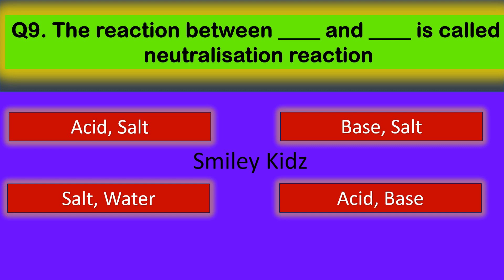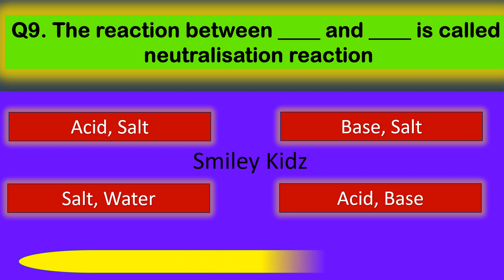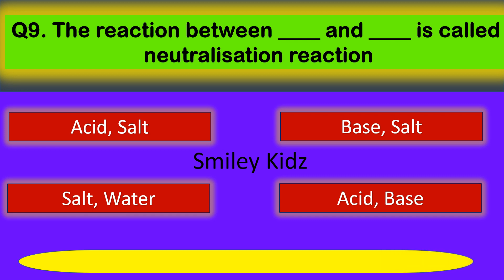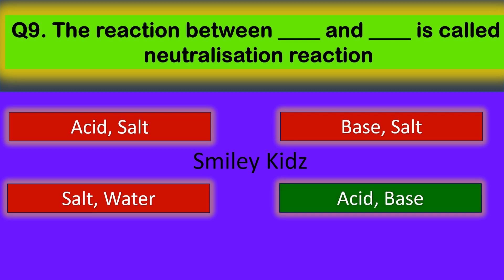Question number nine: the reaction between dash and dash is called a neutralization reaction. Your options are acid and salt, base and salt, salt and water, and acid and base. Your time starts now. Your time is up. The correct answer is acid and base — the reaction between acid and base is called a neutralization reaction.